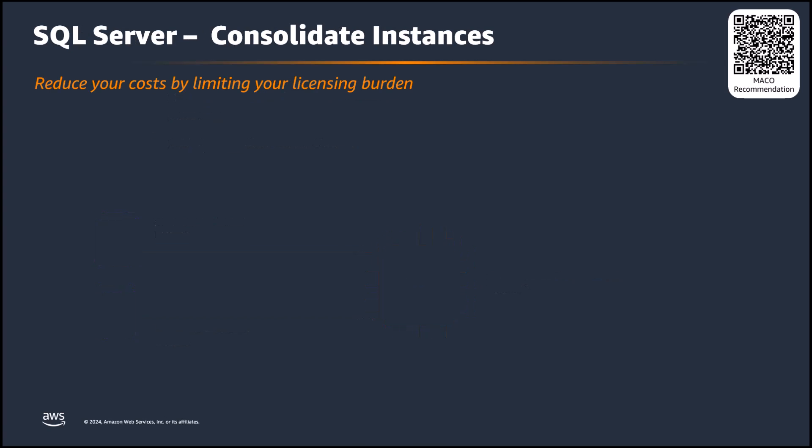According to Microsoft's SQL Server licensing guide, each server running SQL Server must account for a minimum of 4 CPU licenses. This means that even if you run a server with only 2 vCPUs, you must still license SQL Server for 4 vCPUs. In scenarios where servers are running configurations with less than 4 vCPUs, this can lead to wasted resources and increased costs.